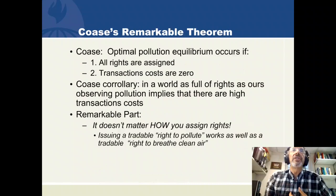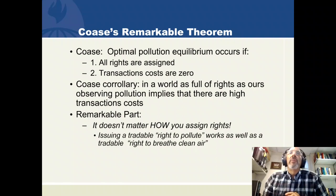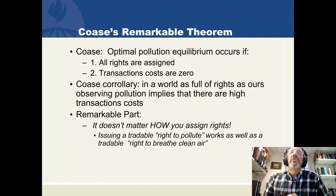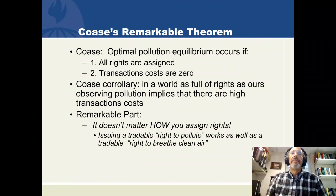We've built enough foundation to talk about Ronald Coase's remarkable theorem. Coase's theorem says that optimal pollution occurs if all rights are assigned and transaction costs are zero — optimal in the sense of marginal social benefit equals marginal social cost. Coase's corollary is that if you observe pollution in a world full of rights to sue and rights to emit, that means there are high transaction costs; the polluter and pollutee couldn't find each other. Remarkably, it doesn't matter how you assign the rights — a tradable right to pollute works as well as a tradable right to breathe clean air.